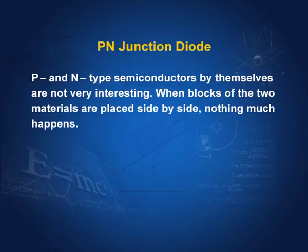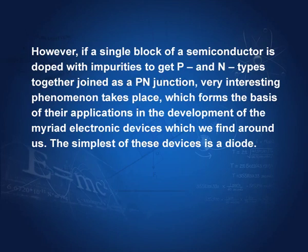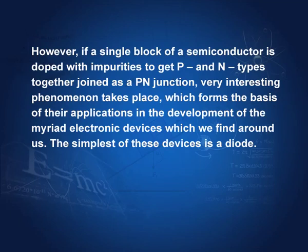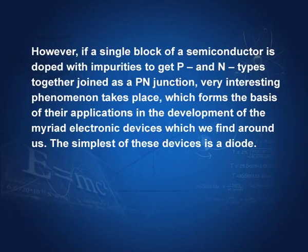P and n-type semiconductors by themselves are not very interesting. When blocks of two materials are placed side by side, nothing much happens. However, if a single block of a semiconductor is doped with impurities to get p and n-type together — joined as a p-n junction — interesting things can happen. This is possible by doping a piece of silicon with both trivalent and pentavalent impurities, so that p and n semiconductors exist side by side. The place where they are joined is called the p-n junction, and very interesting phenomena take place there, forming the basis for a large number of electronic devices. The simplest of these devices is called a diode.